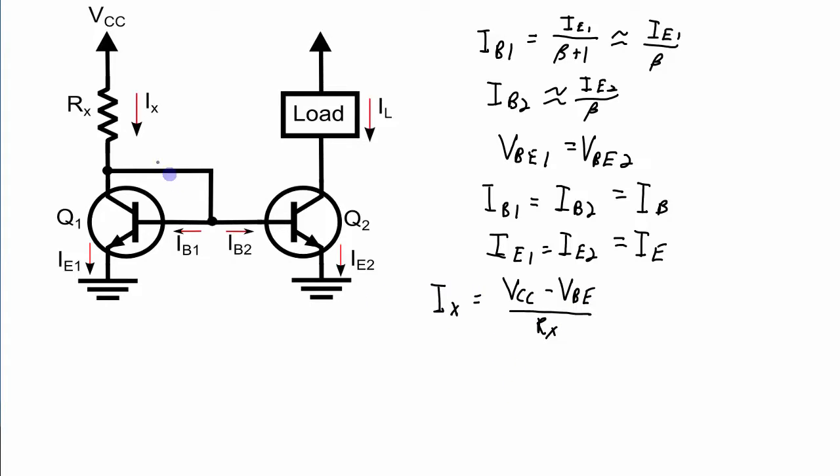At the same time, we can also see that IX, using KCL, or Kirchhoff's current law, IX is coming into this node, and coming out of that node will be this current, which is IB1 plus IB2, and this current, which is IC. And since IB1 and IB2 are the same, we can just call that 2IB plus IC. And as we've assumed up here that beta is really big, so beta plus 1 and beta are approximately the same, which means that IC and IE will also be approximately the same.